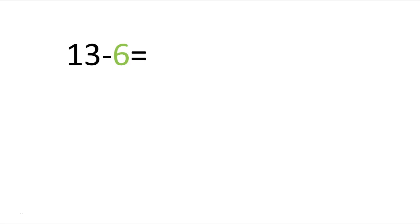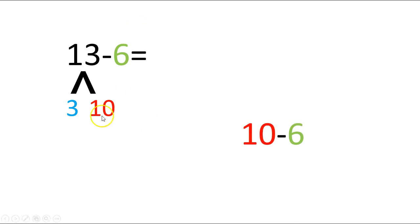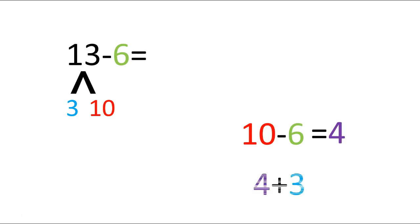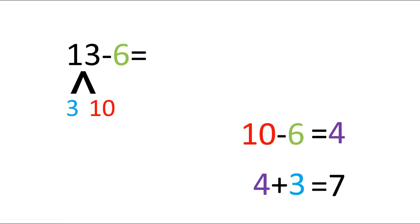Here's our next problem. Go ahead and push pause and then push play when you're done solving it. Let's see if we got this right. We broke up the 13 — we pulled out 3 and had 10 left. My first number sentence is going to be 10 minus 6, and that equals 4. Very good. Then my next number sentence was 4 plus 3. What is 4 plus 3? 7. Very good. So 13 minus 6 equals 7. If yours looks like mine, give yourself a pat on the back. Excellent job.